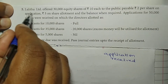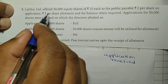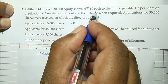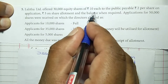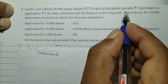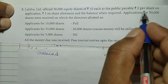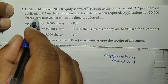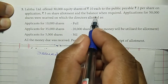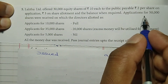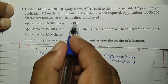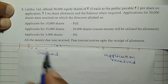Question number 5. Lalitha Limited offered 30,000 equity shares of Rs 10 each face value to the public, payable Rs 2 per share on application, Rs 3 on allotment, and the balance when required. Applications for 50,000 shares were received, on which the directors allotted as given.